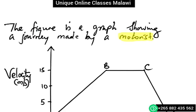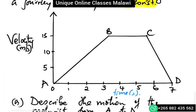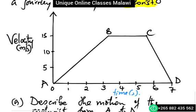This is a journey made by a motorist. We have the graph where the y-axis is the velocity in meters per second and the x-axis is the time in seconds.